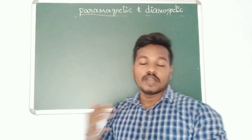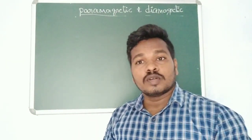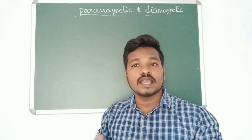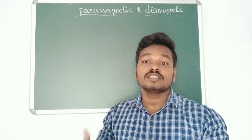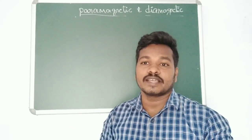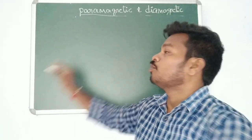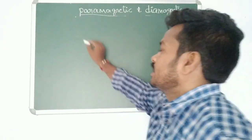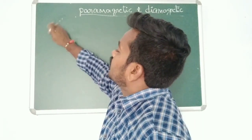Hello everyone, welcome to Easy Chemistry by Praveen. Today I am going to discuss the topic of how to calculate paramagnetic and diamagnetic species. There is a small trick to calculate whether a species is paramagnetic or diamagnetic. First, we have to count the number of electrons.